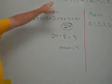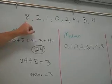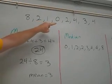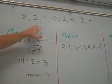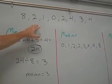So for this video, this is the set of data that we're going to be working with: 8, 2, 1, 0, 2, 4, 3, 4. If you need to pause the video to write those down, please do so at this time.